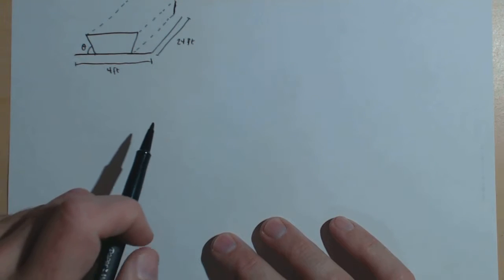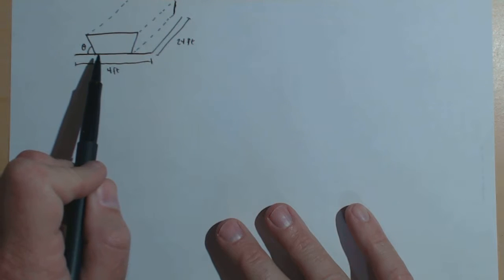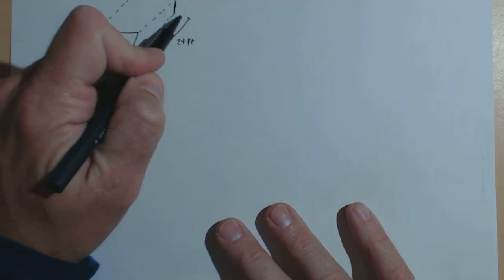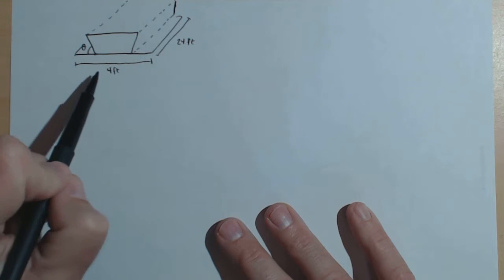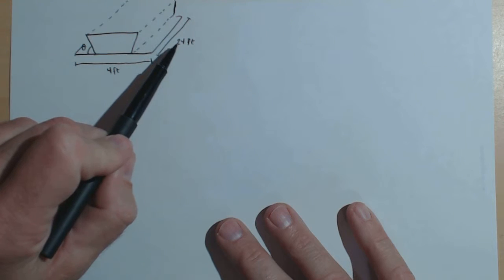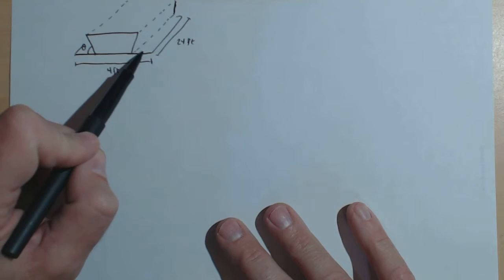In this video, we're going to do optimization on the volume of a trough whose cross-section is a trapezoid. And what's happening is we're starting off with a sheet of metal that's 4 by 24.